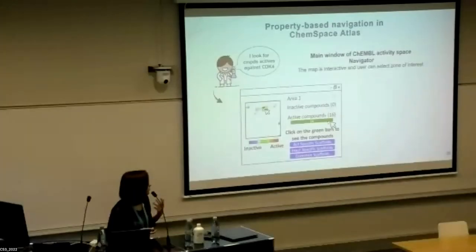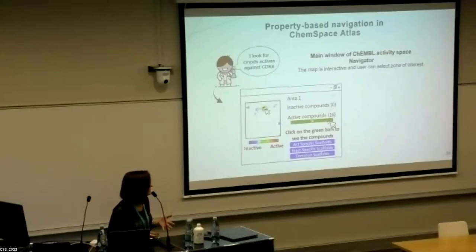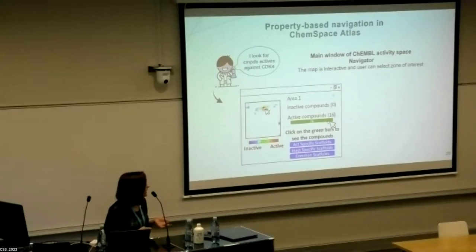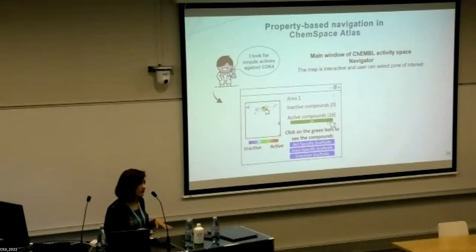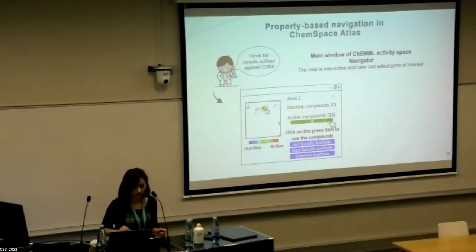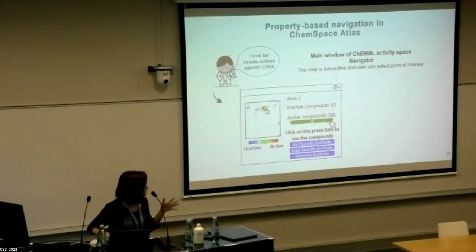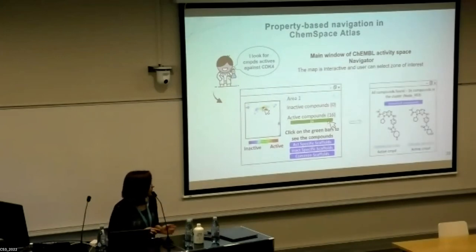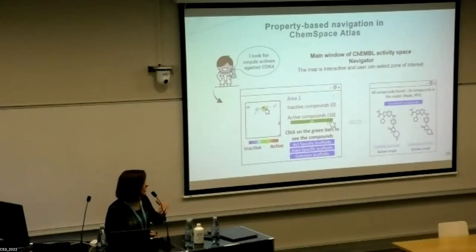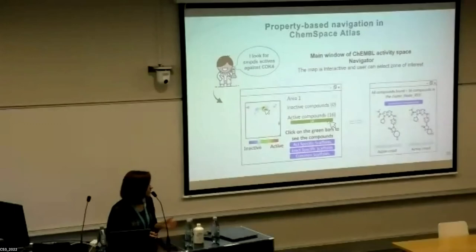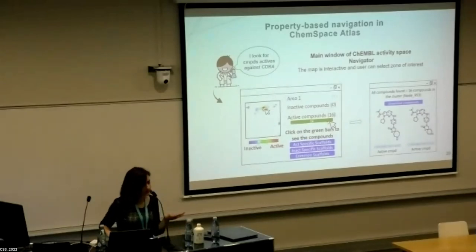There are two ways to navigate this complex structure. The first is property-based navigation: if you have a particular target activity in mind, you go to the ChEMBL activity space navigator, select a map for a target like CDK4, and browse interactively. You select an area — for example a red area containing active compounds — and see how many actives and inactives are there, visualize structures, access links to initial datasets, and download SMILES or scaffolds.